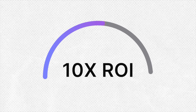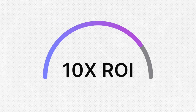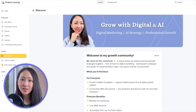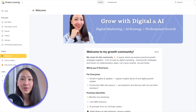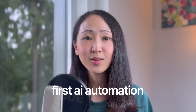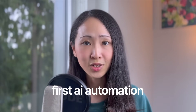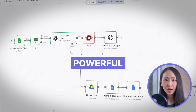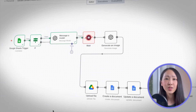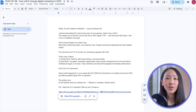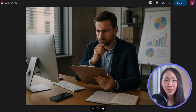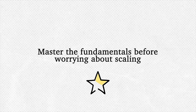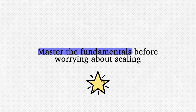The truth is, even a simple AI automation will give you immediate ROI for your business or work. My community members suggested covering these AI automation topics. In this video I'll show you how to build your very first AI automation — simple, less technical, but powerful: a social content AI automation that generates posts, images, and documents all from a single entry in Google Sheets.